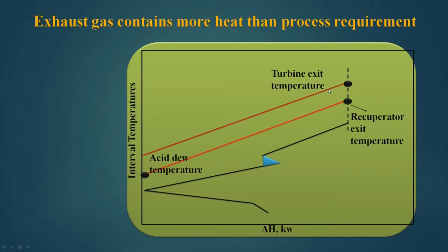To achieve this, we take up some energy from this turbine exit gas and give that energy to the recuperator. The recuperator will heat the incoming air and will bring down the turbine exit gas temperature. So there will be a fuel saving of this amount — this is the delta H axis — and the fuel saving will be worth this much of delta H.